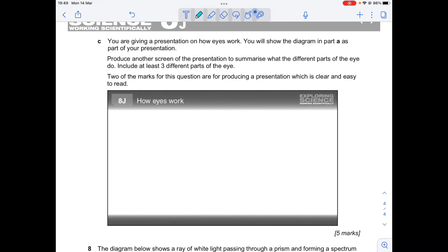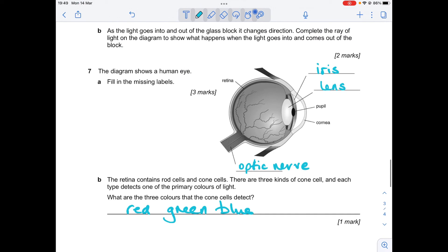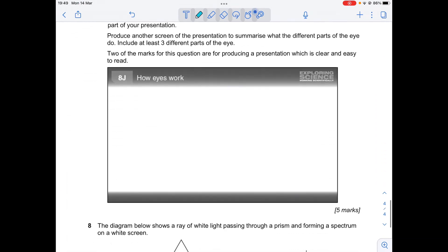You are given a presentation on how the eye works. You will show the diagram in part A as part of your presentation. Produce another screen of the presentation to summarize what the different parts of the eye do. Include at least three different parts. Two of the marks for this question are for producing a presentation which is clear and easy to read. So I'm just going to pause now.